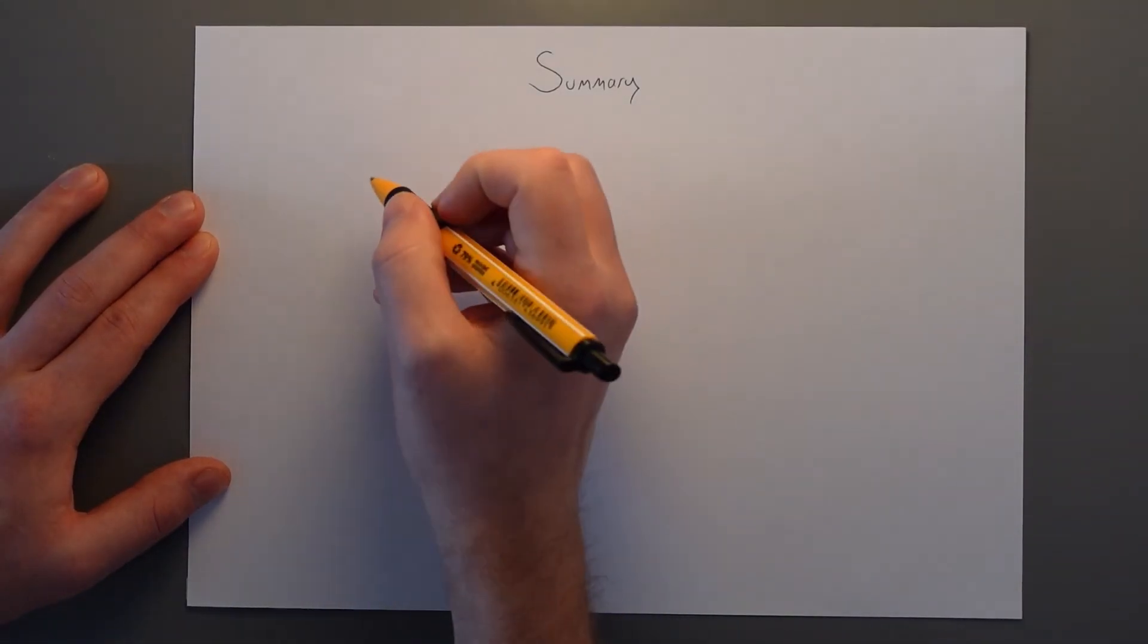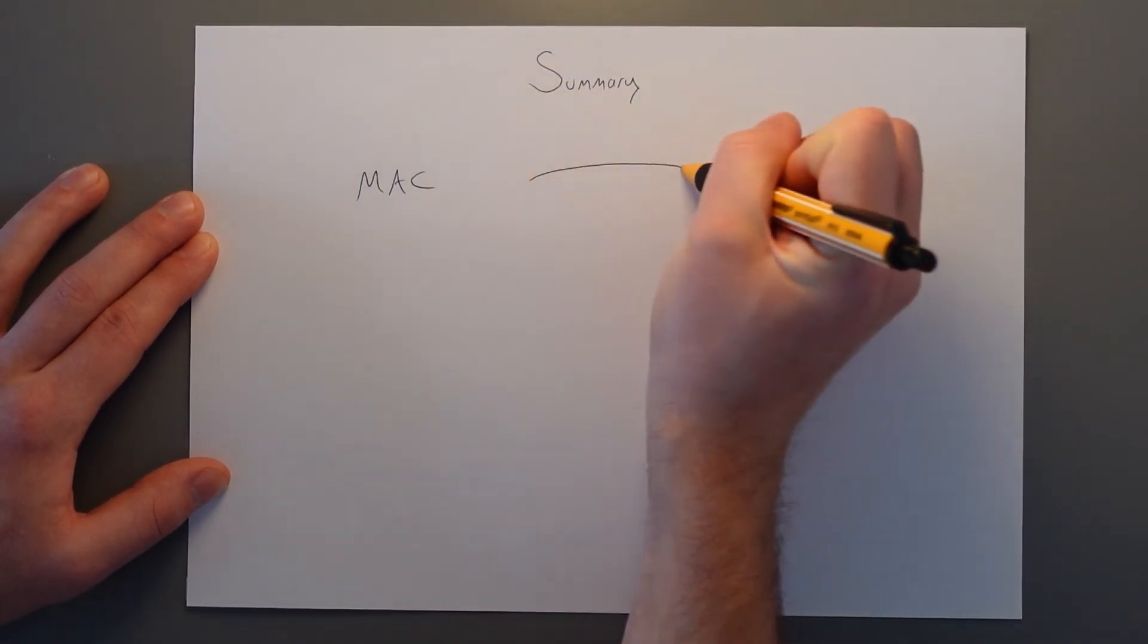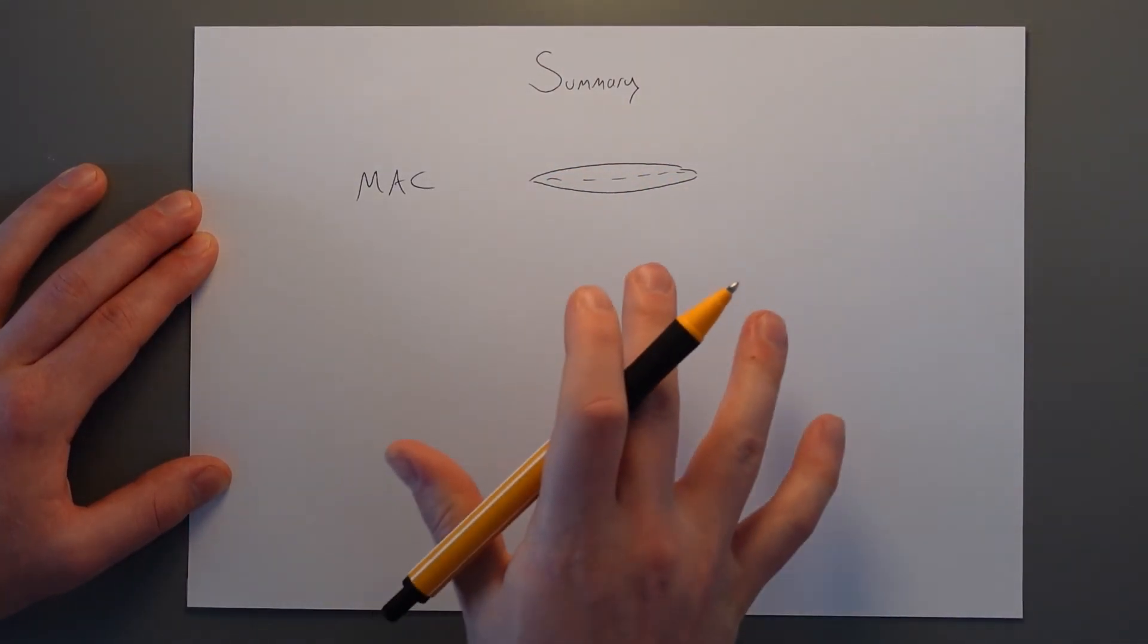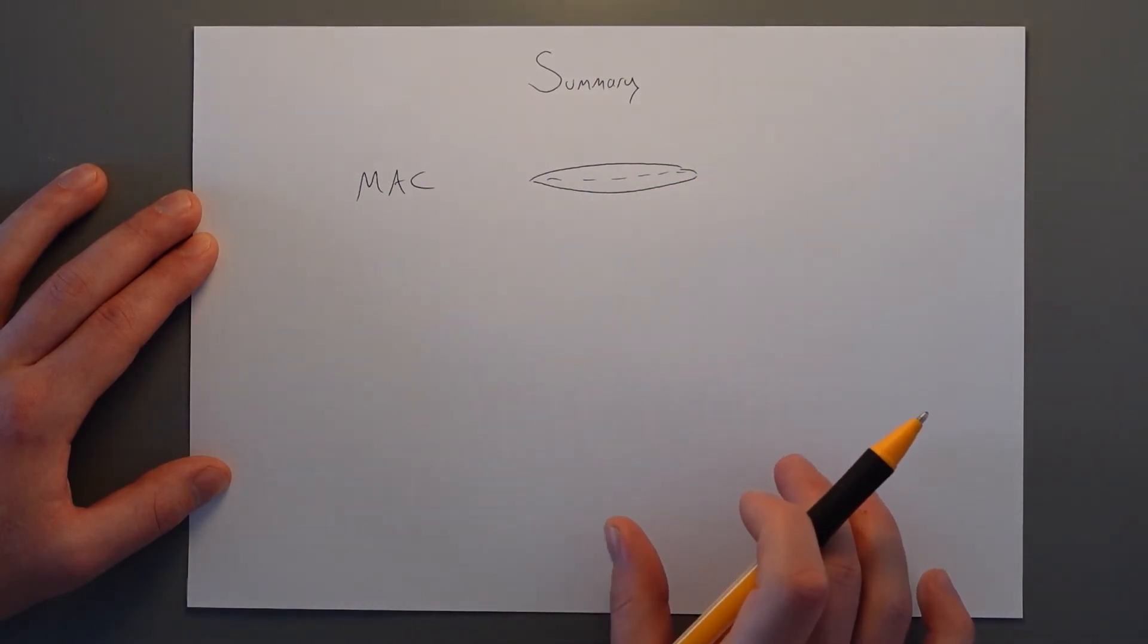To summarise, the MAC is an average shape of the wing. It's this line that goes through. It's a fictional concept but it's the average chord length of the whole wing if it was equated to a rectangular wing.